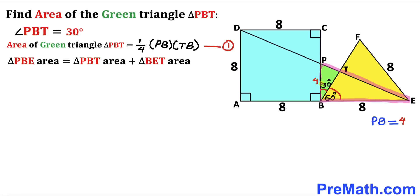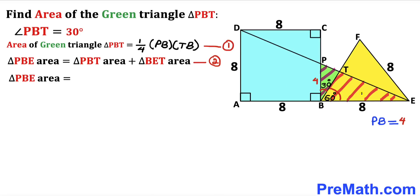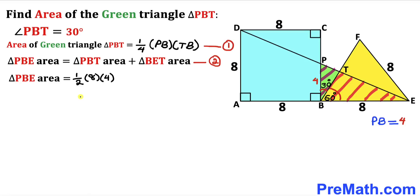Let's focus on triangle PBE. The area of triangle PBE will be part of Equation 2. Using the area formula: Area = ½ · base · height, our base is 8 and our height PB is 4 units. So the area = ½ · 8 · 4 = 16. Thus the area of triangle PBE is 16 square units.